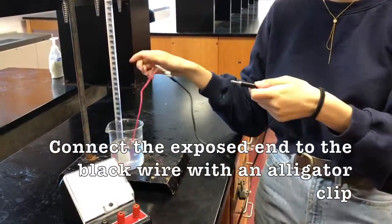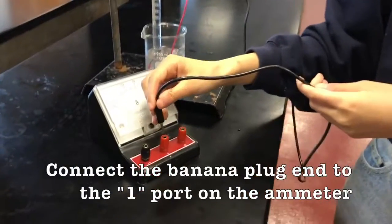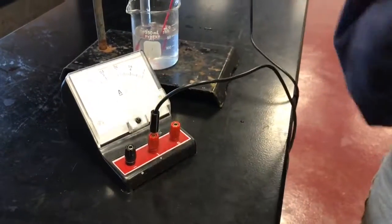Connect this exposed end to the black wire with an alligator clip. Connect the banana plug end of the black wire to the one port on the ammeter.